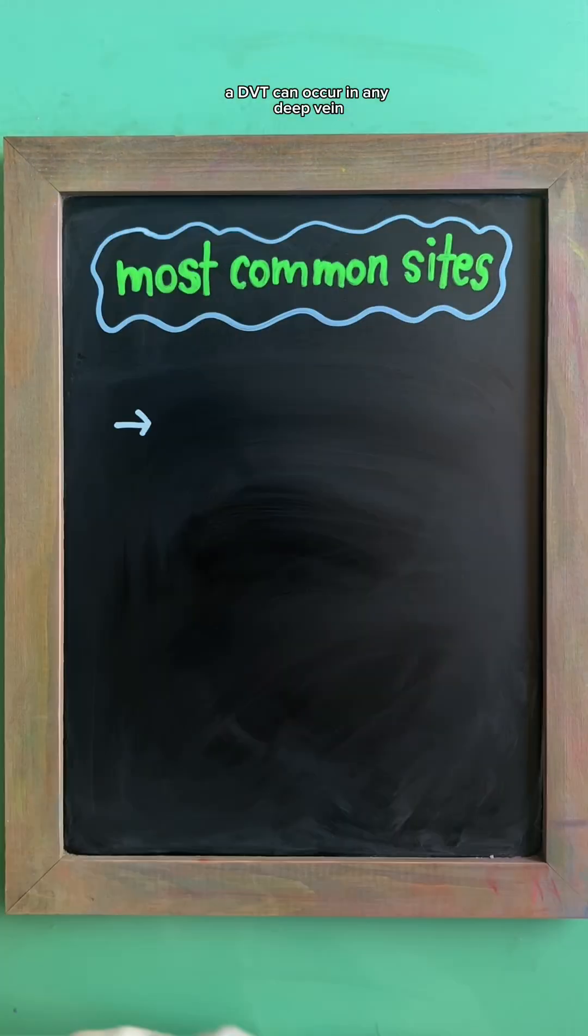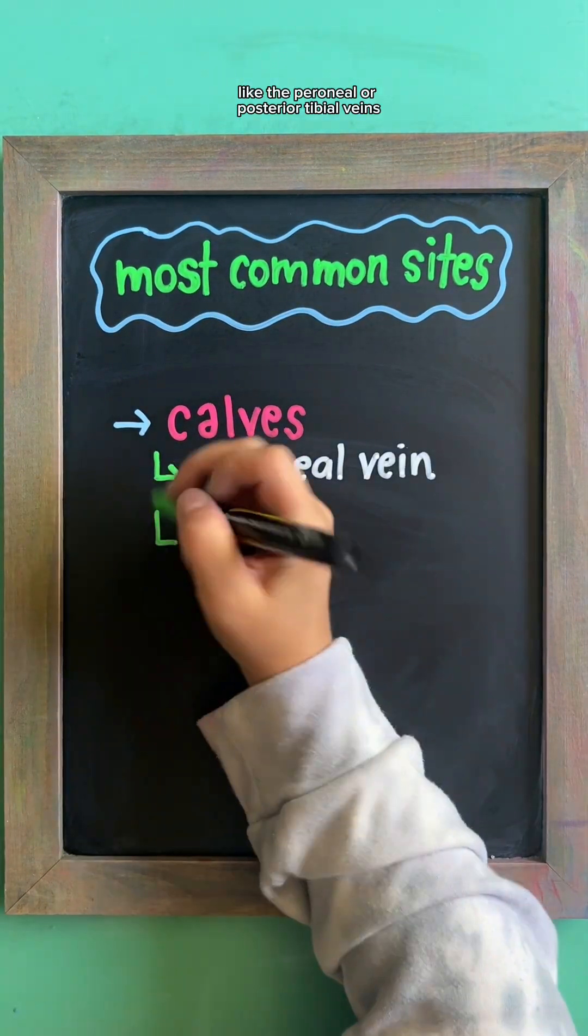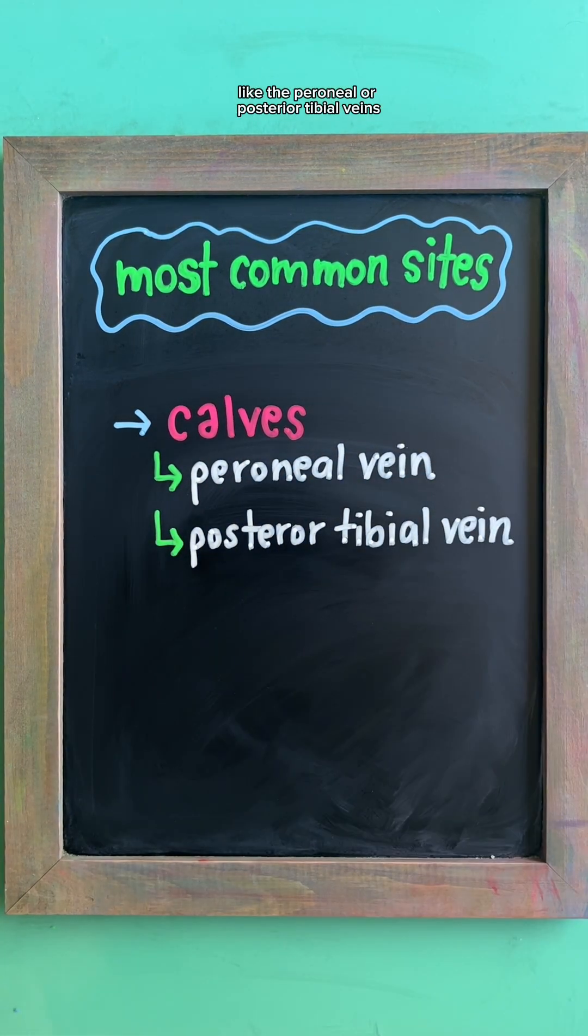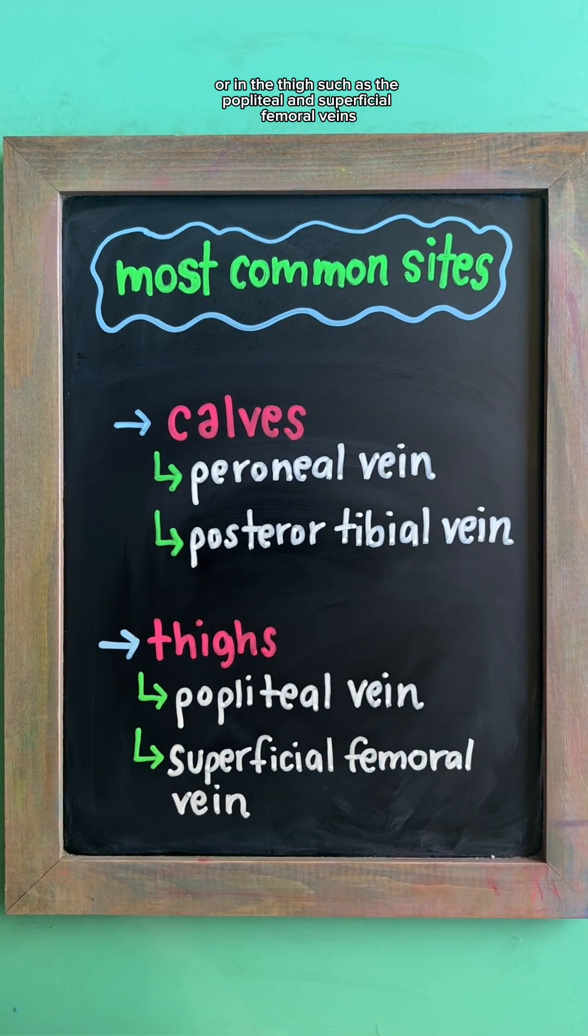A DVT can occur in any deep vein, but it's most common in the calves, like the peroneal or posterior tibial veins, or in the thighs, such as the popliteal and superficial femoral veins.